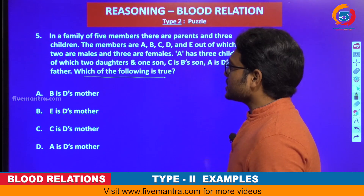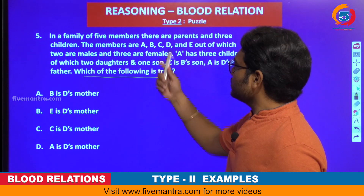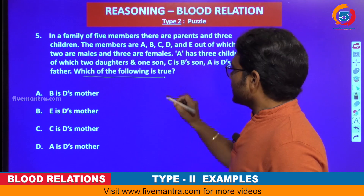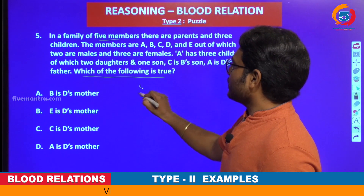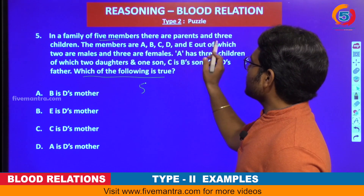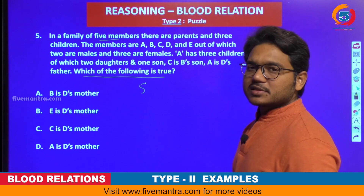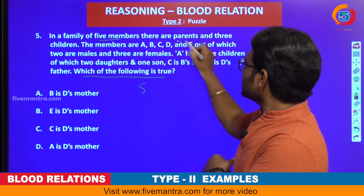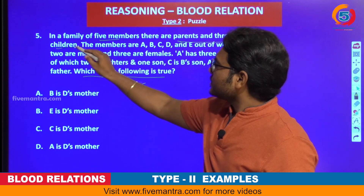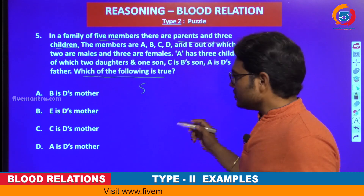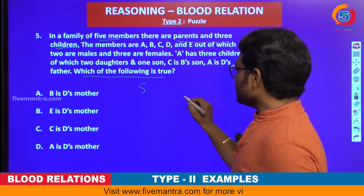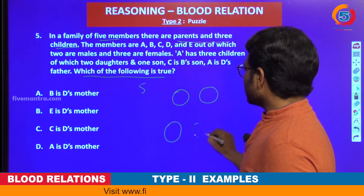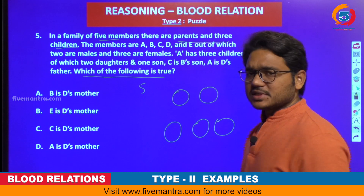The observation we get is: a family of 5 members — there are parents and 3 children. This makes the problem a bit simpler. We can easily draw the skeleton of this relationship tree initially. Parents will be 2 out of 5.